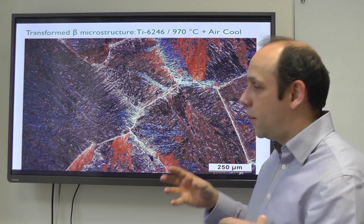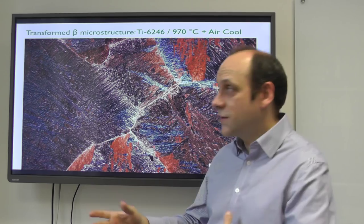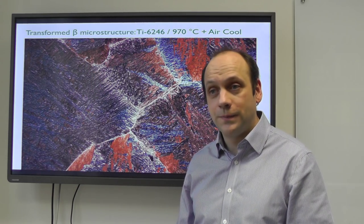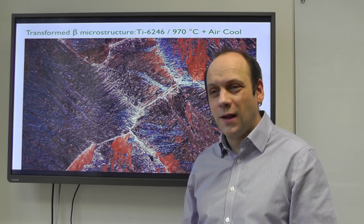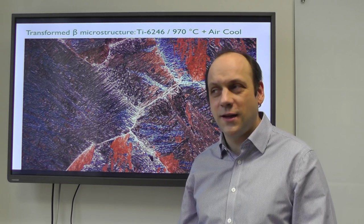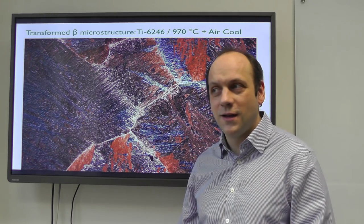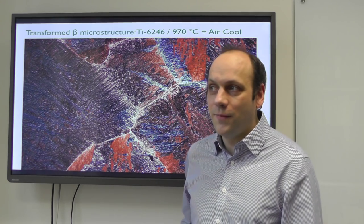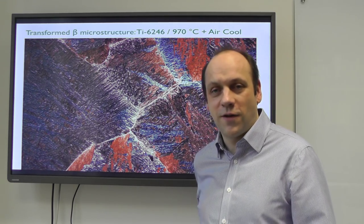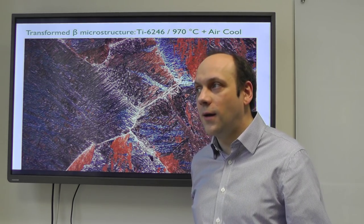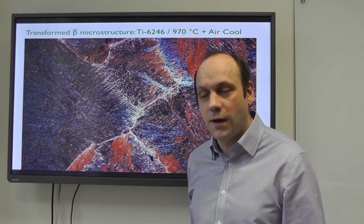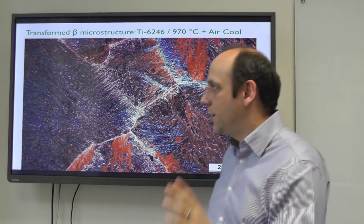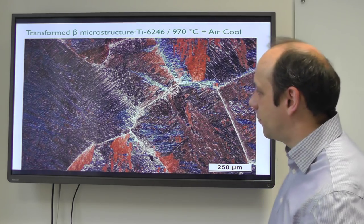You can hot work and recrystallize those grains and get them down to a few hundred microns, but you can't get them much smaller. For comparison, in steels you can get prior austenite sizes as fine as you like in the right alloy, but commonly around 60 microns or so.